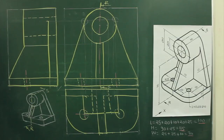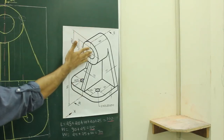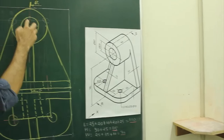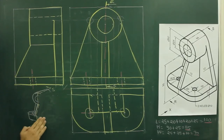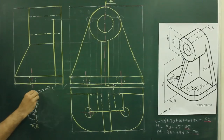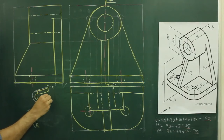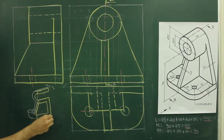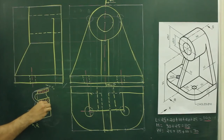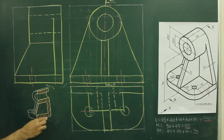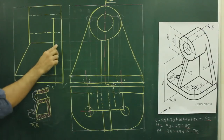Now for the sectional side view — you see the cutting plane. The cutting plane RS is passing through like this. So we have to draw the sectional side view. We have to draw the cutting plane in front and remove this object. When you draw hatching, there won't be any hatching over the rib because we are cutting it parallel. But the behind portion is also a rib that is getting cut perpendicular, so we need to hatch that.